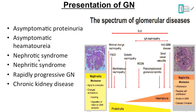Nephrotic syndrome has edema and proteinuria as main features, while nephritic syndrome has hematuria, oliguria, and hypertension. For rapidly progressive glomerular nephritis the symptoms are the same as nephritic syndrome, but as the name suggests it is rapidly progressive — the duration is shorter and it usually ends up with chronic kidney failure.